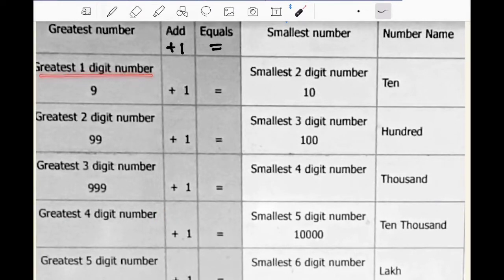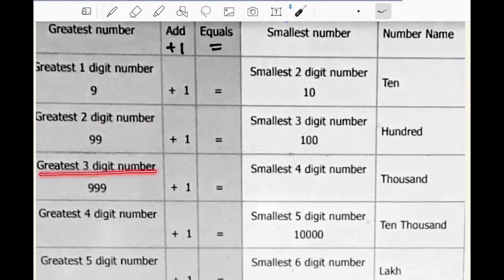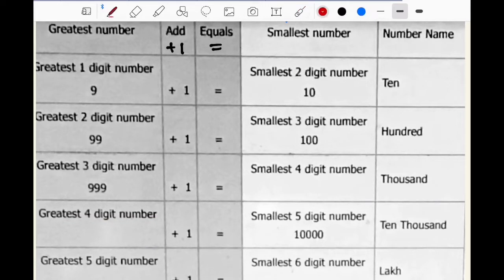Greatest one digit number has one nine. Greatest two digit number has two nines. Greatest three digit number has three nines. So, greatest four digit number has four nines: 9, 9, 9, 9.